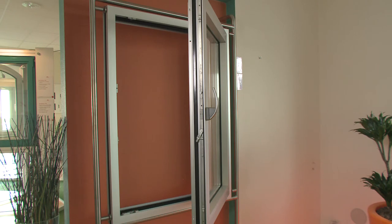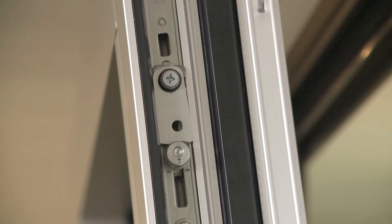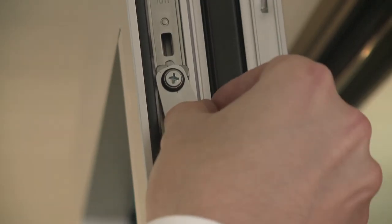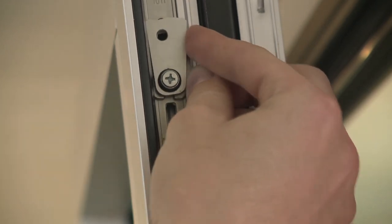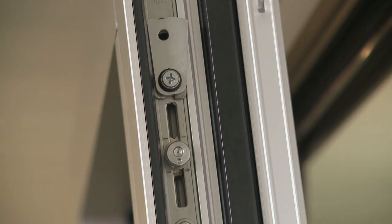This travel restrictor can easily be retrofitted to any existing tilt and turn window with a tilt first mechanism. This is another of those small components from Roto that can make a big difference to the functionality and use of a window. See you in the next video.